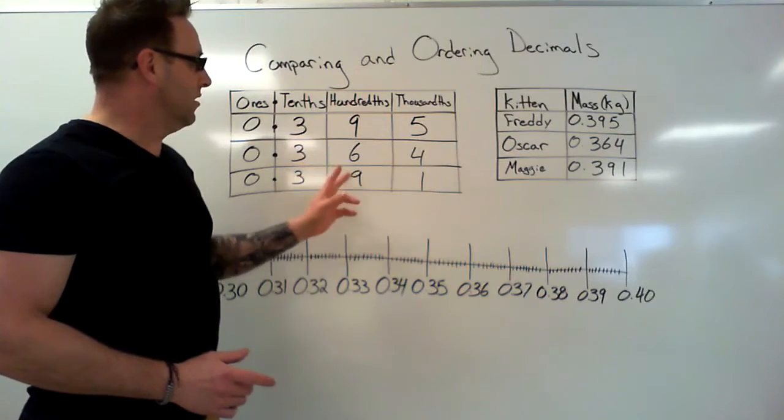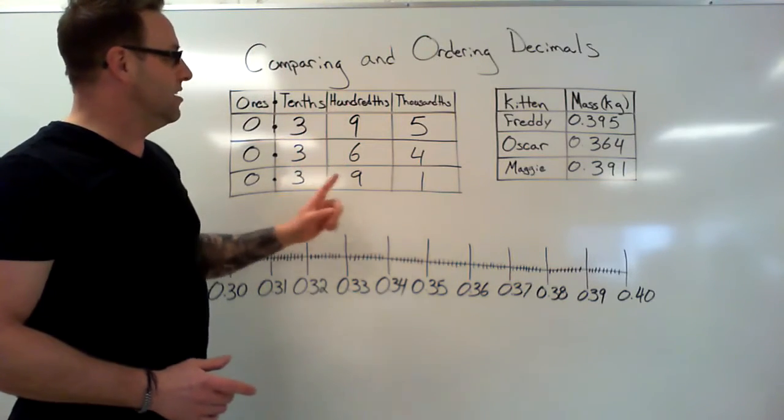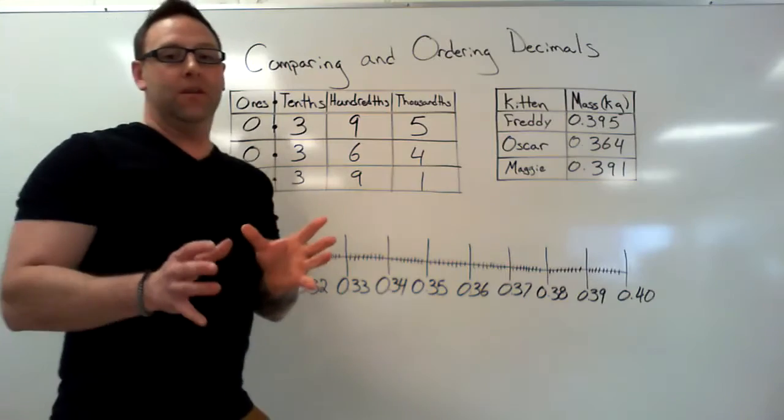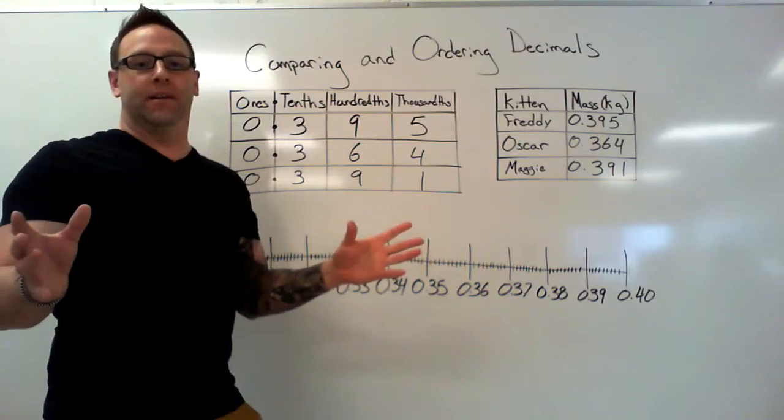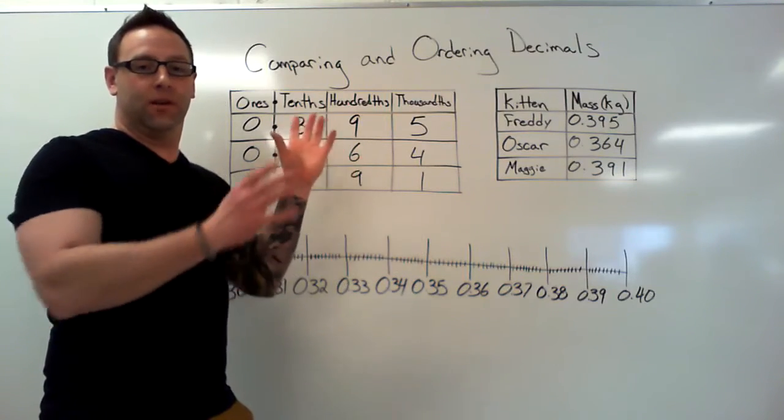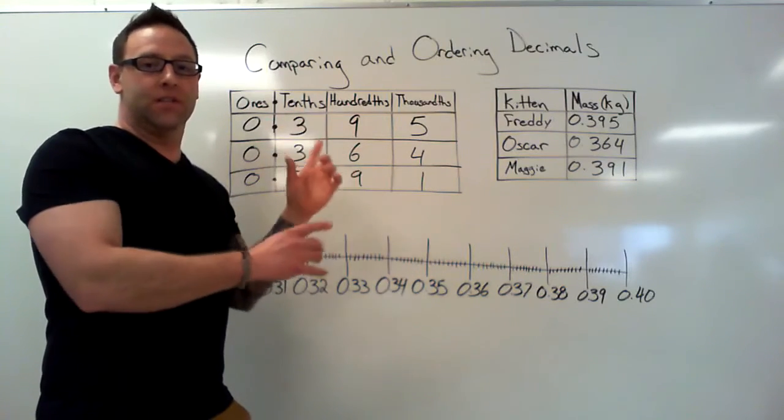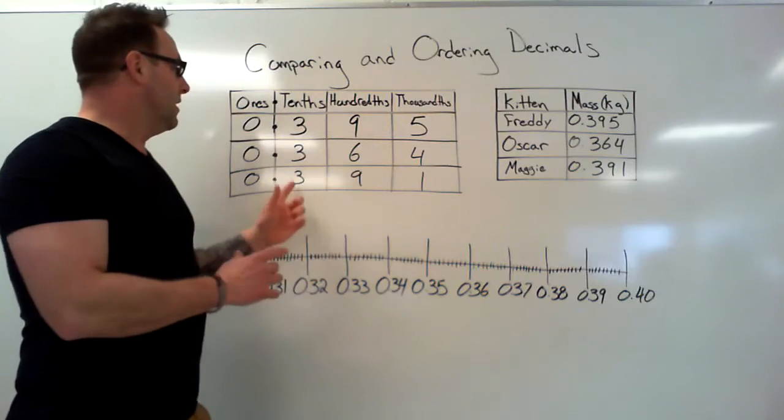Now in the hundredths place, things get a little different. We've got a nine, a six, and a nine. So thinking about alphabetical order or ordering anything, we can start to take apart these numbers and see which ones are bigger.